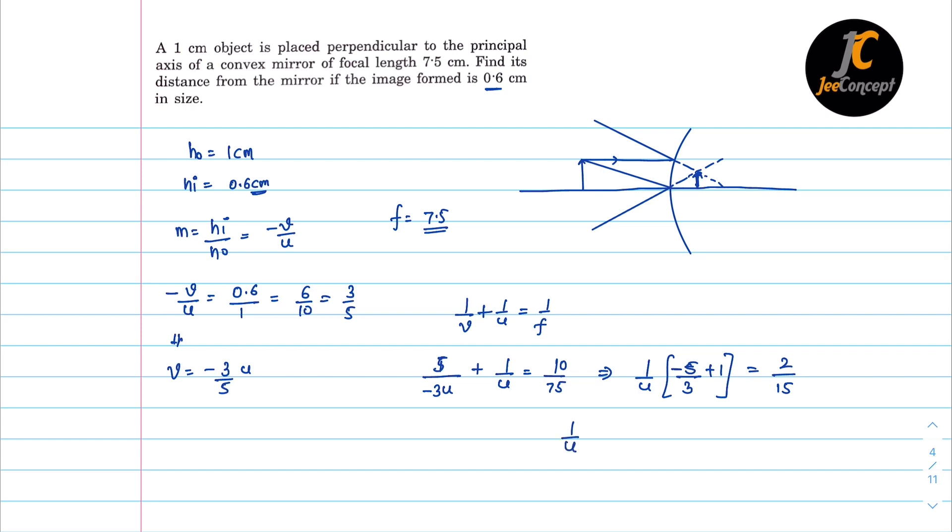1 by u, minus 5 plus 3 by 3 is equal to 2 by 15. 1 by u into minus 2 by 3 is equal to 2 by 15.